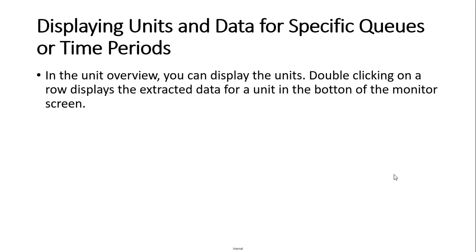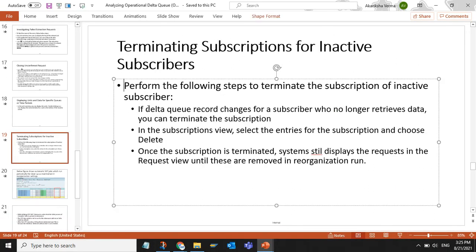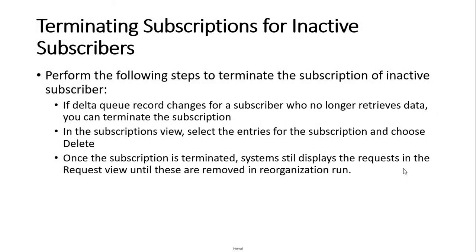In the unit overview, you can display the units. Double-clicking on a row displays the extracted data for a unit in the bottom of the monitor screen. To terminate the subscription of an active subscriber: if delta queue record changes for a subscriber who no longer retrieves data, you can terminate the subscription. In the subscriptions view, select the entries for the subscription and choose Delete. Once the subscription is terminated, the system still displays the requests in the request view until these are removed in a reorganization run.